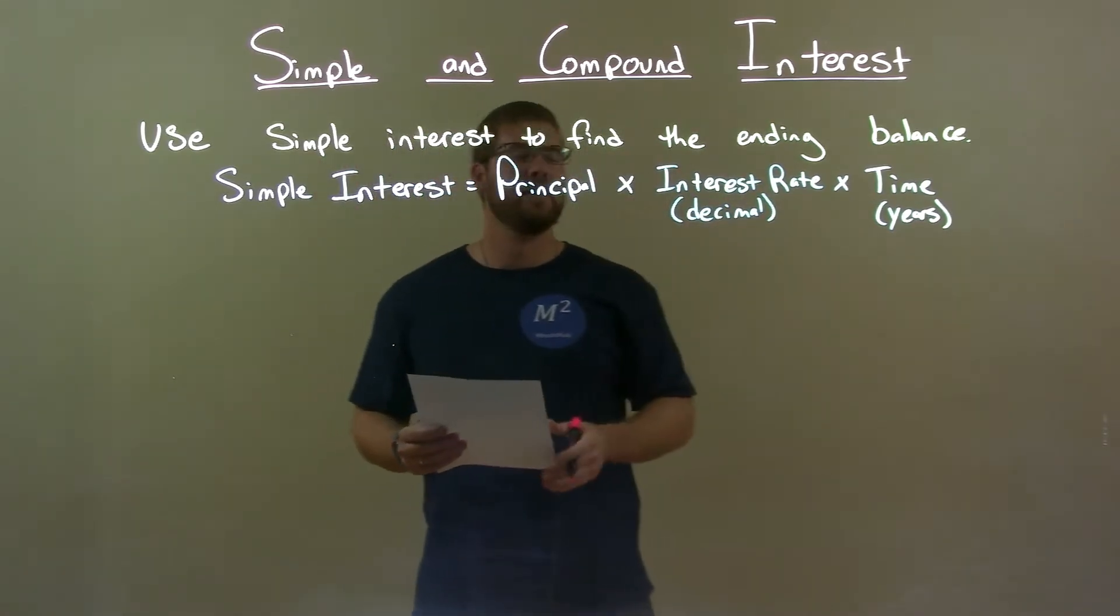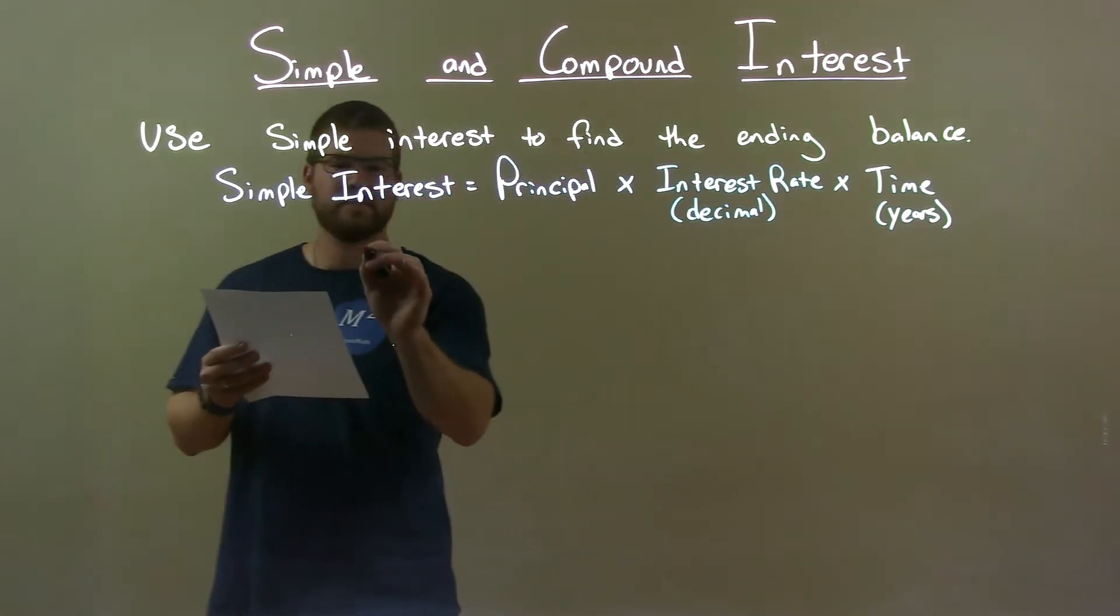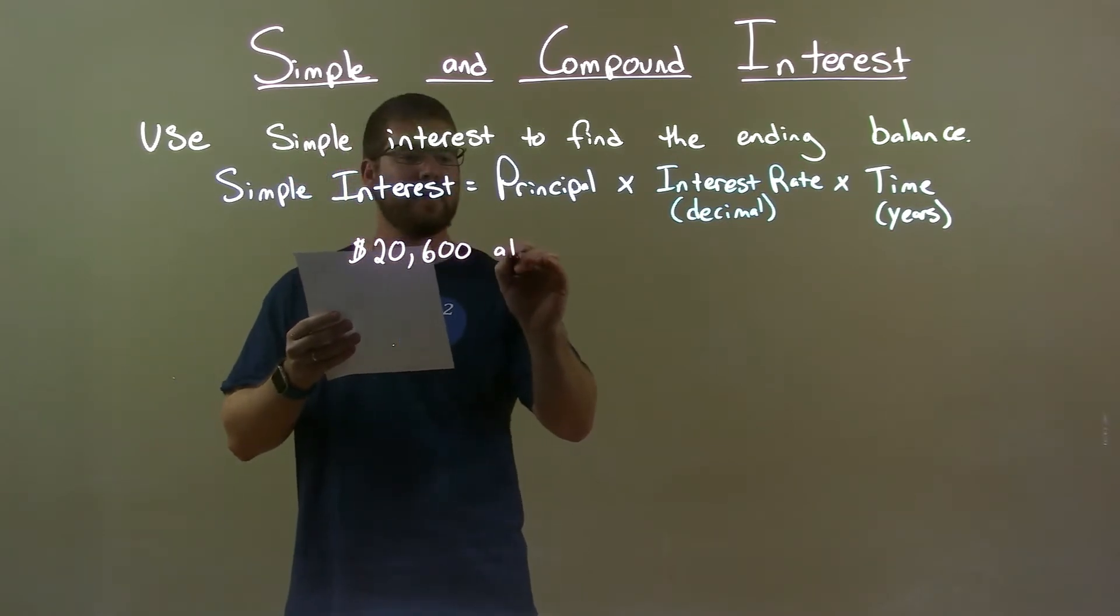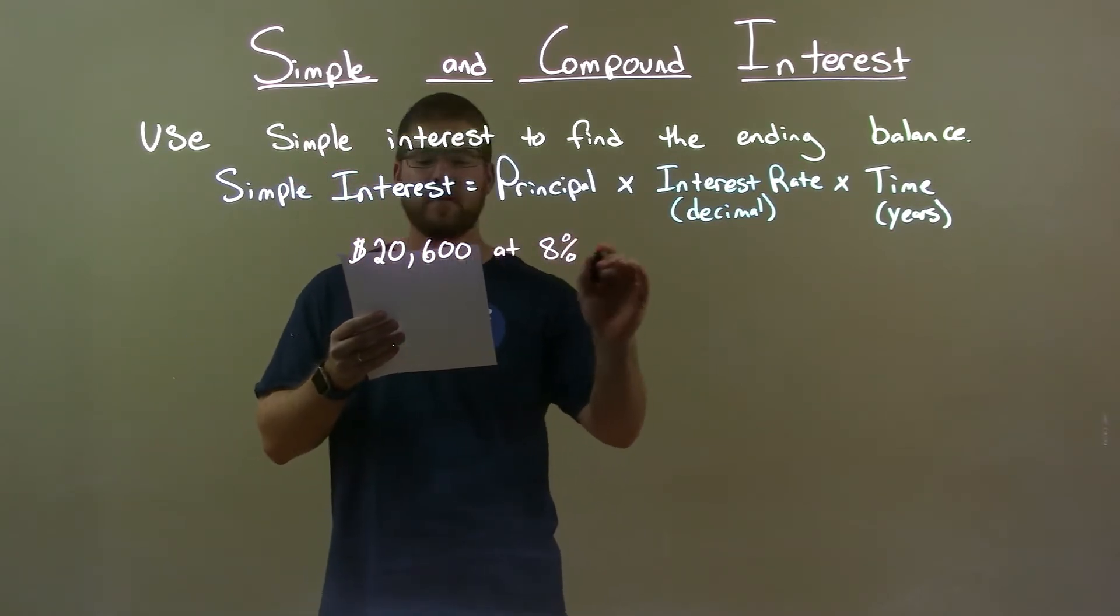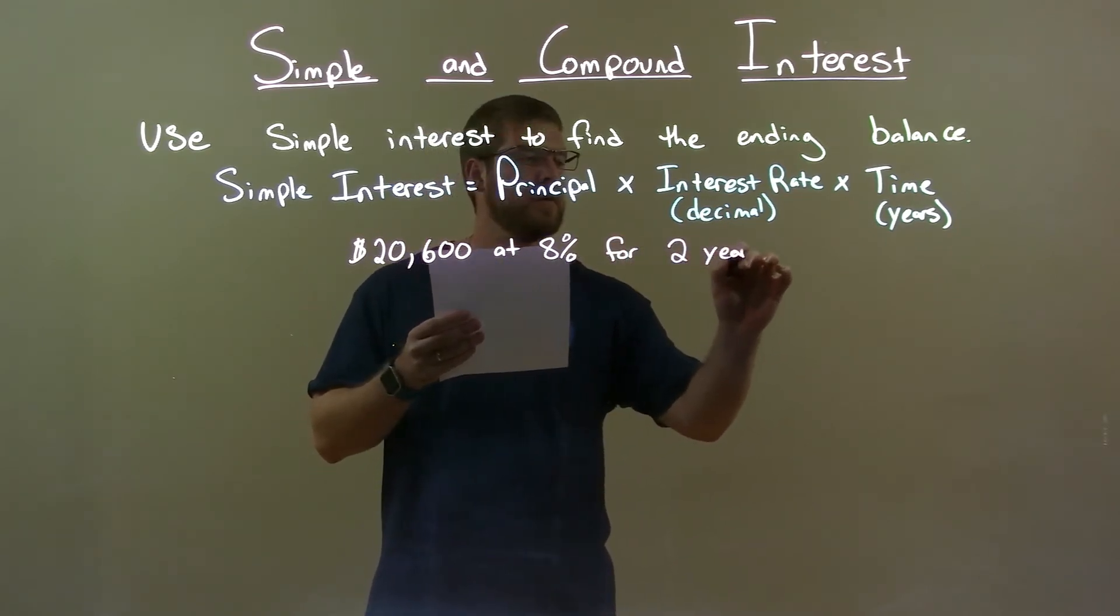Use simple interest to find the ending balance. If I was given this problem: $20,600 at 8% for 2 years.